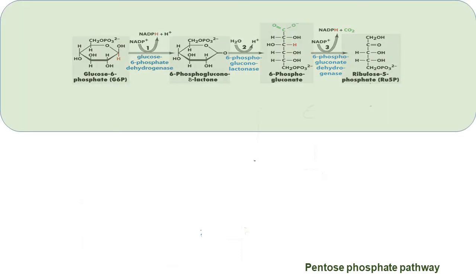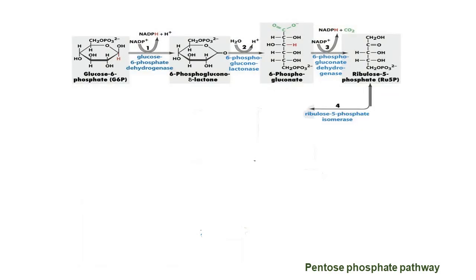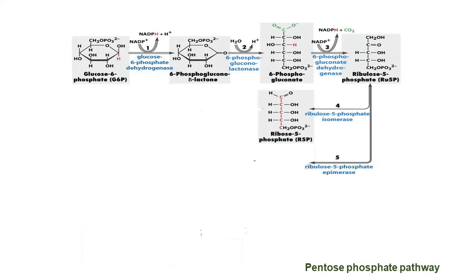In the non-oxidative phase, the reactions are reversible. This allows different molecules to enter the pentose phosphate pathway at different areas of the non-oxidative phase and be transformed into ribulose-5-phosphate, the first molecule of the non-oxidative phase and a product of the oxidative stage. Ribulose-5-phosphate can be converted into two different 5-carbon molecules: ribose-5-phosphate via isomerase enzyme, which is the sugar used to make DNA and RNA, or xylulose-5-phosphate via epimerase.